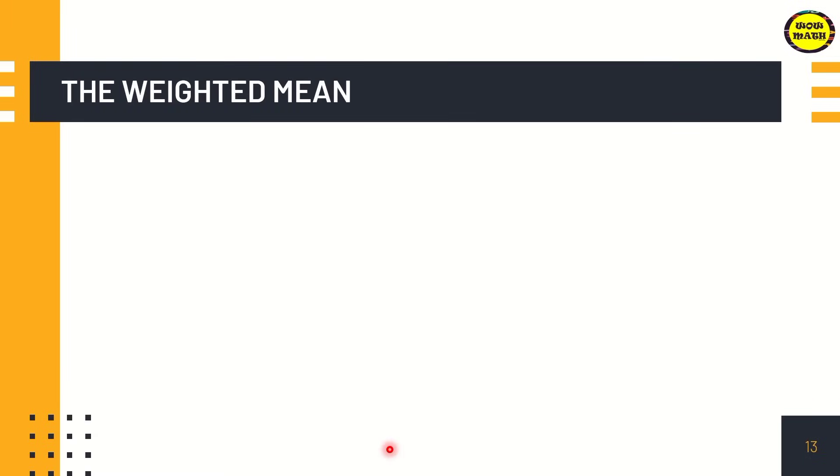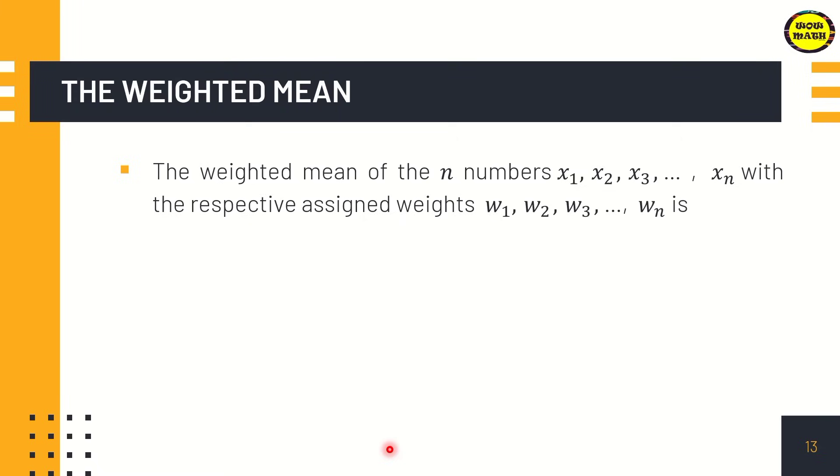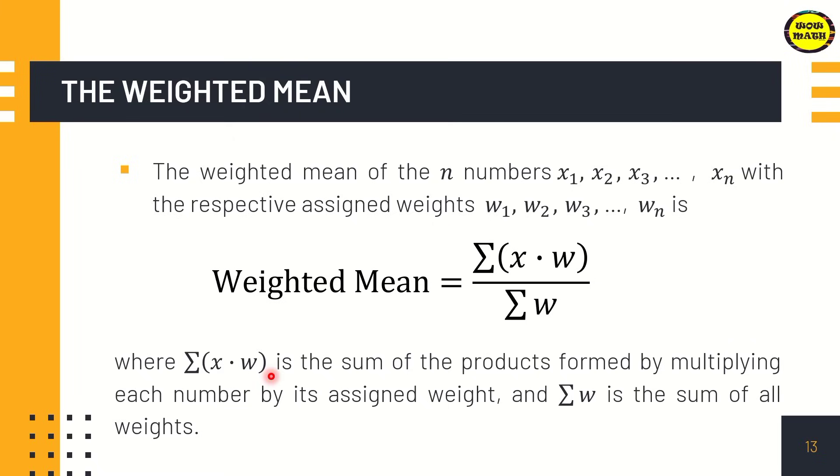We also have the weighted mean. The weighted mean is for numbers from x sub 1 to x sub n with their respective assigned weights. This is commonly used when computing grades, especially in college, because in college each subject has units. We use this formula to get the weighted mean: the summation of x times w over summation of w, where the summation of x times w is the sum of the products formed by multiplying each number by its assigned weight, and the denominator is the sum of all weights.